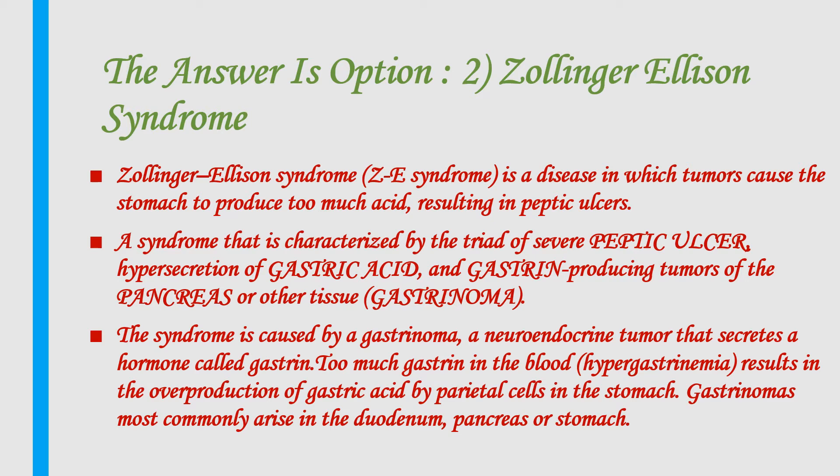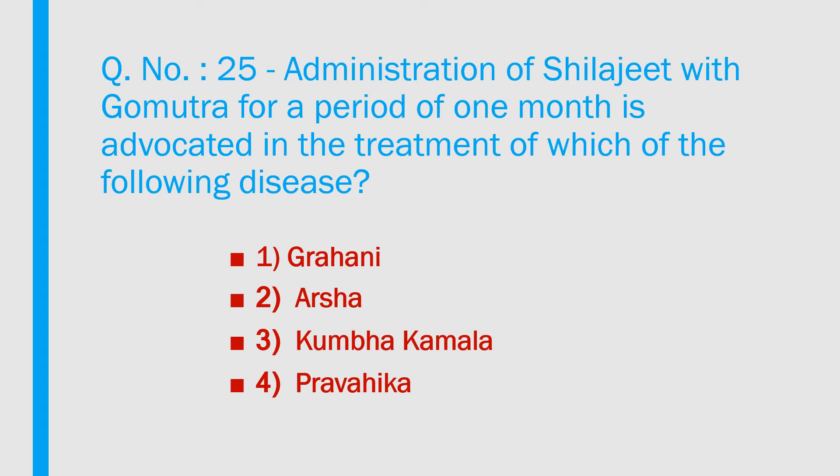Zollinger-Ellison syndrome is characterized by the triad of severe peptic ulcer, hypersecretion of gastric acid, and a gastrin-producing tumor of the pancreas or other tissue — a gastrinoma. The syndrome is caused by a gastrinoma, a neuroendocrine tumor that secretes gastrin. Excess gastrin in the blood (hypergastrinemia) results in overproduction of gastric acid by parietal cells. Gastrinomas most commonly arise in the duodenum, pancreas, or stomach.